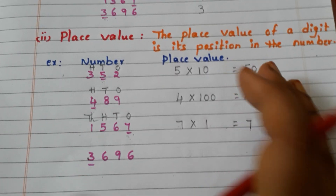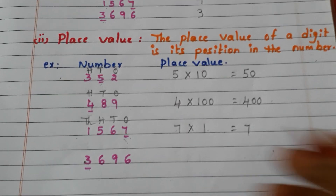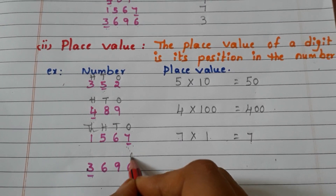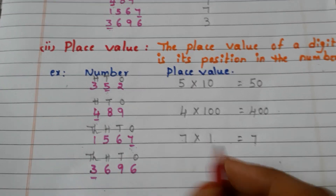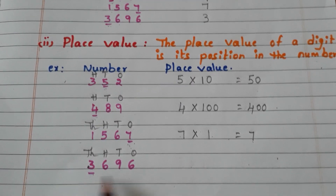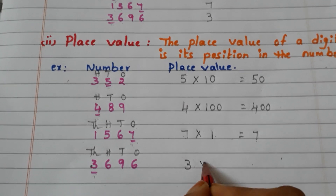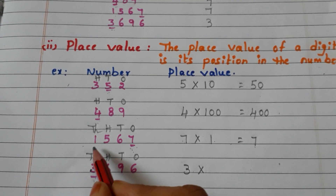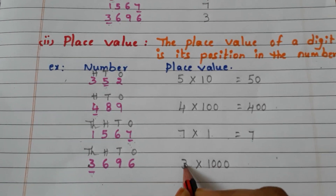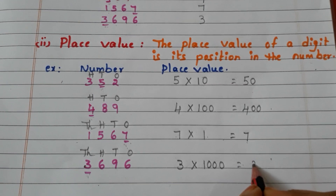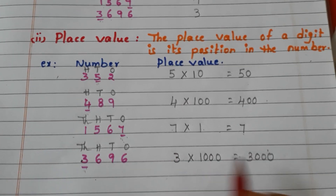Let us go to the last example: 3,696. First, write the places on top of the number: 1's, 10's, 100's, 1000's. Then write the face value of 3 — what is the face value of 3? 3 itself. In which place is 3? The 1000's place. So we write 1000. 3 into 1000 — the place value of 3 is 3000.